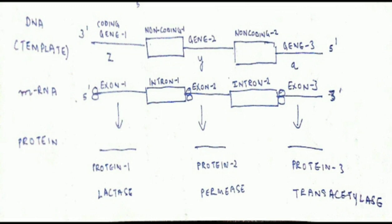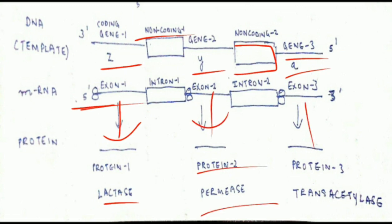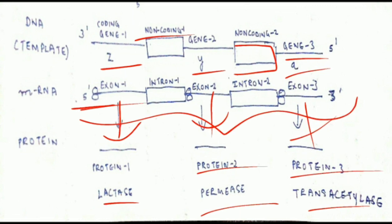For example, in the lac operon, the DNA template has coding gene 1 (Z), then a non-coding region, gene 2 (Y), non-coding region, and gene 3 (A). As mRNA is produced and comes out, ribosomes attach. Exon 1 produces protein 1 — lactase; exon 2 produces protein 2 — permease; and exon 3 produces protein 3 — transacetylase. So a single mRNA produces three proteins — this is a polycistronic gene.